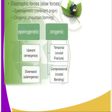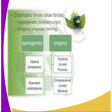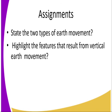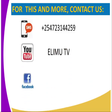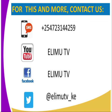That marks the end of our lesson. You can see how epigenic and orogenic forces are the two ways in which Earth movement occurs. The assignment activity for today: list the features that result from vertical Earth movements. For more information, you can reach us via SMS, YouTube, Facebook, and Twitter. Stay tuned to AIDIN TV. Thank you for watching.